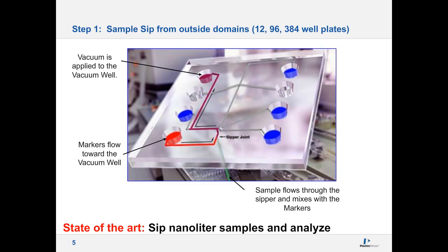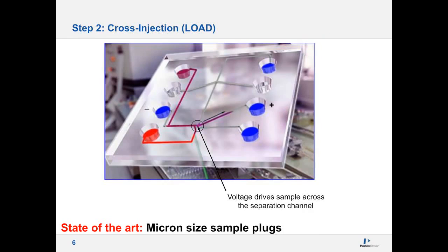The first step is always injection of a sample, ladder, or standard. We apply a vacuum pressure in a well, which brings the sample to the channel, adds the marker to the sample, and it starts flowing. This process takes only a few seconds. We bring the sample to the microfluidic chip and it is ready to be loaded into the gel part of the chip. The state of the art is that we only need nanoliters of sample to analyze, and when we go to the next sample, it cleans up the previous sample and then injects the next one.